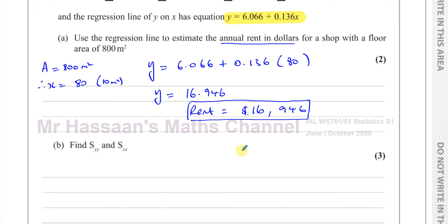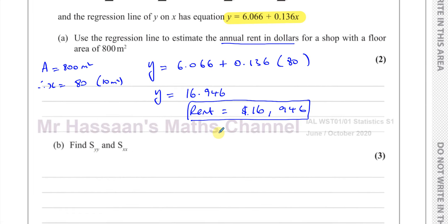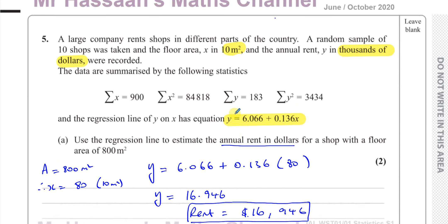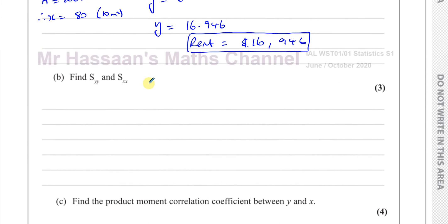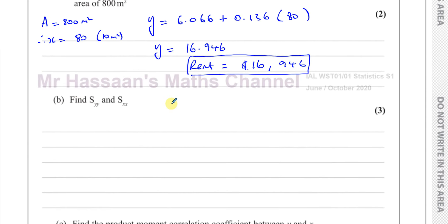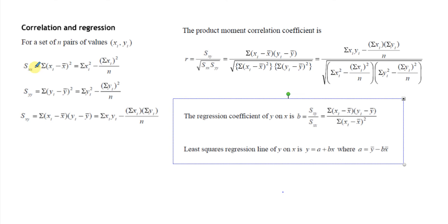Part B asks us to find SYY and SXX. In correlation and regression, a lot of your work depends on the formula sheet. When you see something like SYY or SXX and don't know what it means, go straight to the formula sheet. You can see these formulas listed there.